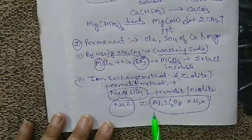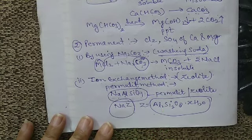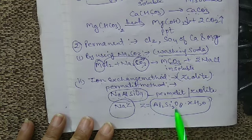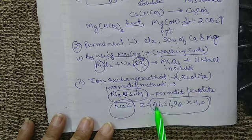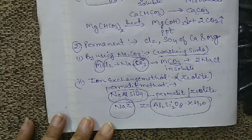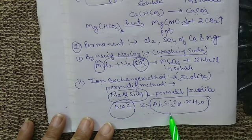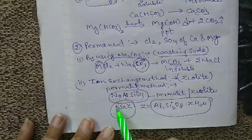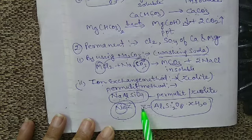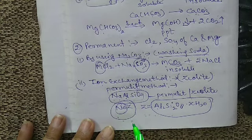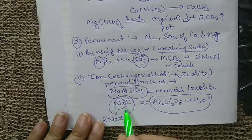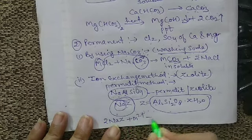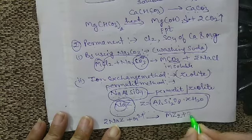In this method, the zeolite is loosely packed over layers of gravel and sand in a big tank. Hard water is introduced from the top, rises up through the gravel and sand layer, and finally percolates through the bed of permutite. During this process, the calcium and magnesium ions of the hard water exchange with the sodium ions. The reaction is: 2NaZ + M²⁺ → MZ₂ + 2Na⁺.